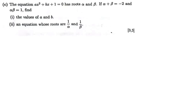Let's now go ahead and solve Part C, which is under the quadratic nature of the roots. The question says the equation ax² + bx + 1 = 0 has roots alpha and beta. If alpha plus beta is negative 2 and alpha times beta is 1, find: part 1, the values of a and b; part 2, an equation whose roots are 1 over alpha and 1 over beta.